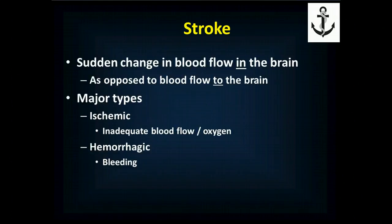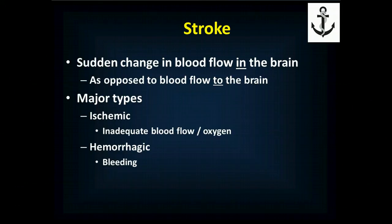Stroke is another major issue — a sudden change in blood flow in the brain where blood flow is cut off to a part of the brain. This is as opposed to syncope, where globally the whole brain doesn't get enough blood flow and passes out. In stroke, the blood flow problem is in the brain itself. There are two major types: ischemic, which is the vast majority, where there's inadequate blood flow and oxygen to a specific part of the brain — ischemia means lack of oxygen — and hemorrhagic, where there's bleeding in the brain itself, about 15% of strokes.